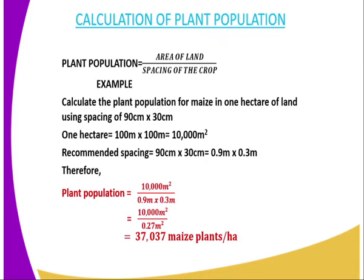If you multiply the spacing, 0.9 by 0.3, you get 0.27 square meters. The area of the land is 10,000 square meters. Therefore, you take the area of the land, 10,000 square meters, and divide by 0.27 square meters. The plant population for maize becomes 37,037 maize plants in that particular hectare of land.